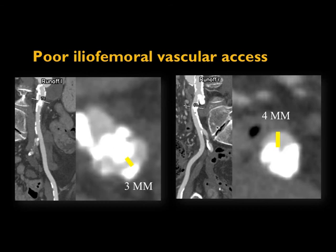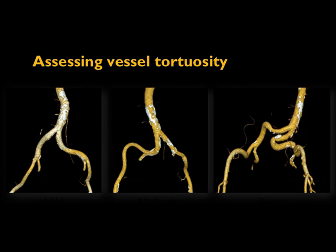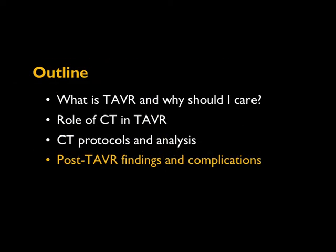In addition to measurements, we provide an assessment of vessel tortuosity from mild to moderate to severe. In the severe category, the vessel takes about a 180-degree hairpin turn; moderate is around a 90-degree bend; and mild is less than that.